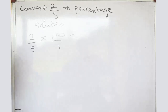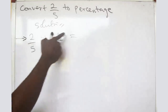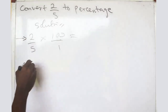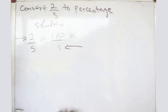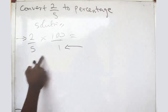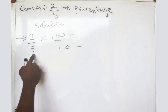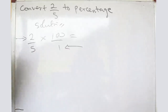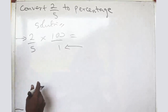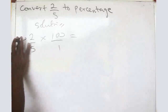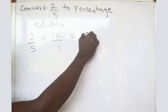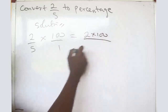If you can recall from one of my videos dealing with multiplication of fractions, whenever you are multiplying fractions, you multiply the numerator by the numerator and the denominator by the denominator. So for two over five, you take two multiplied by one hundred, all divided by five multiplied by one.